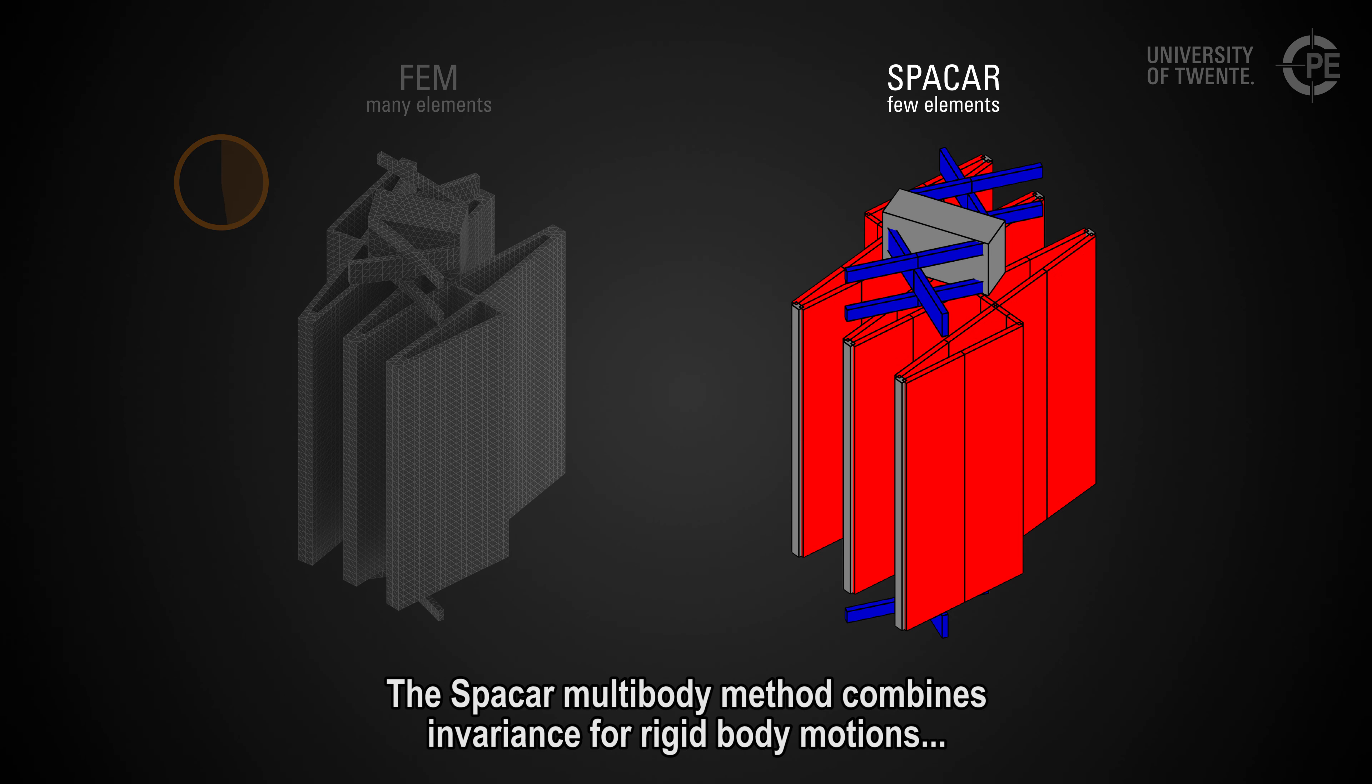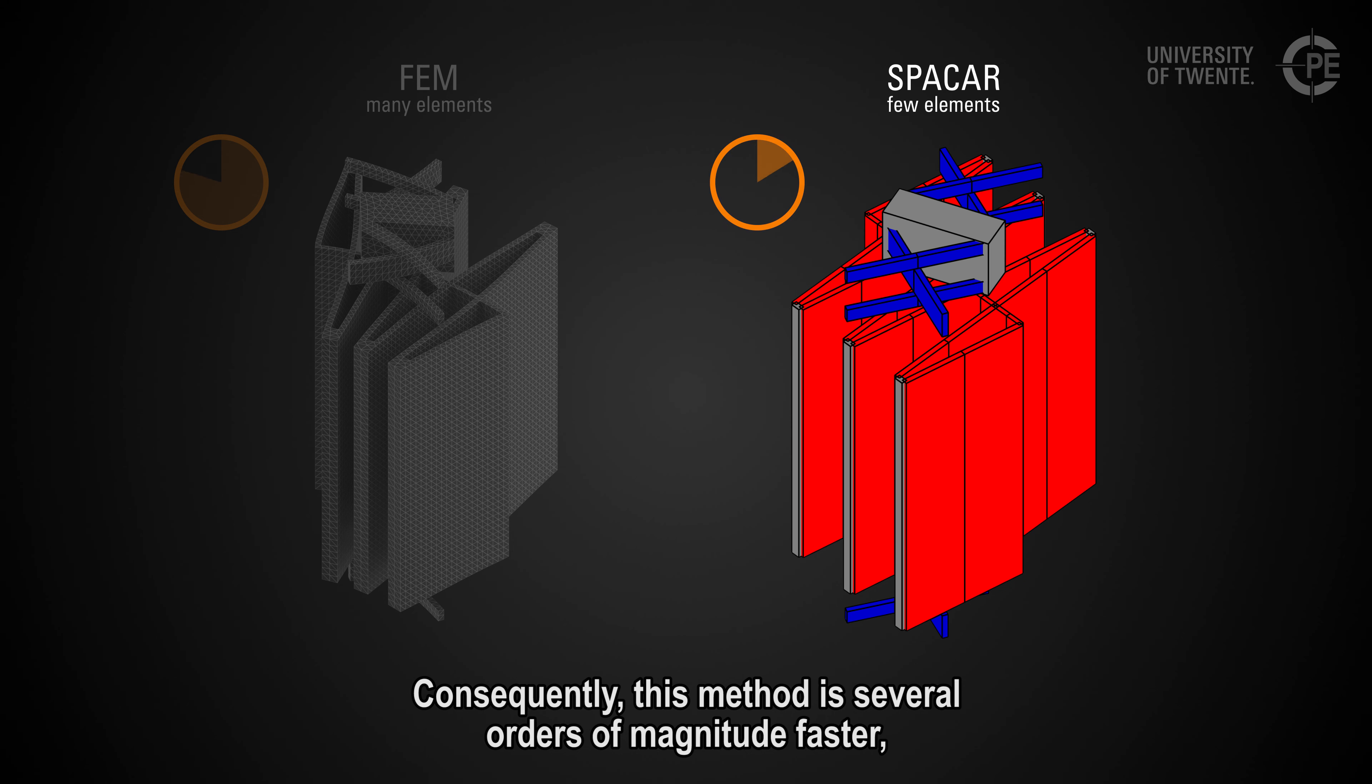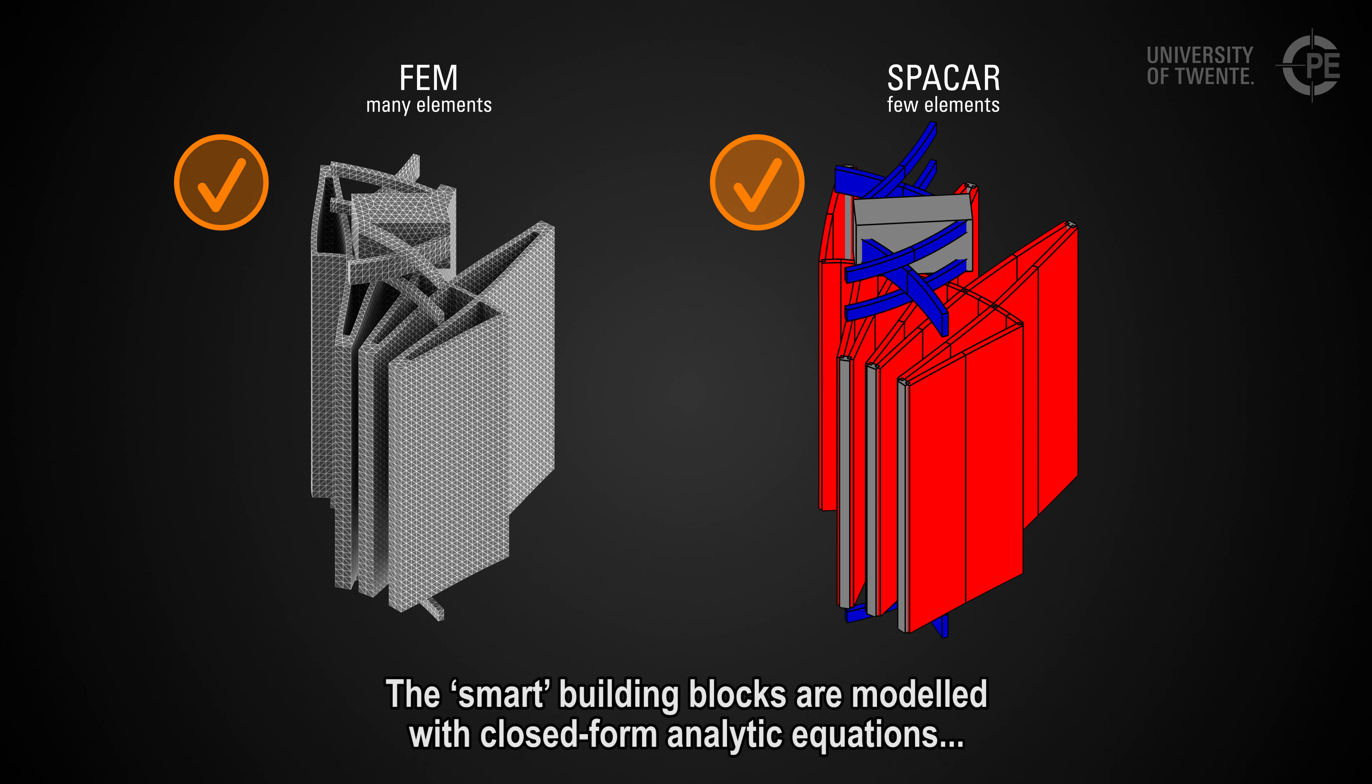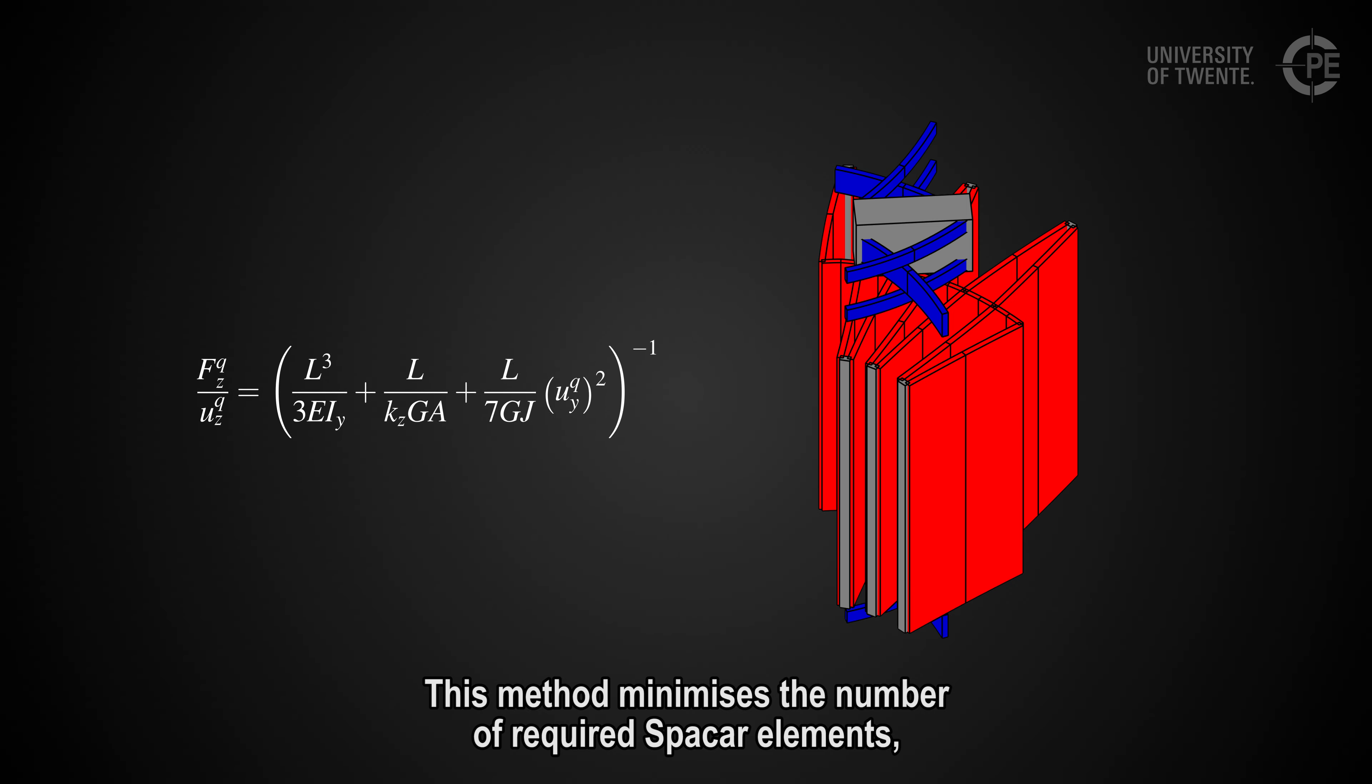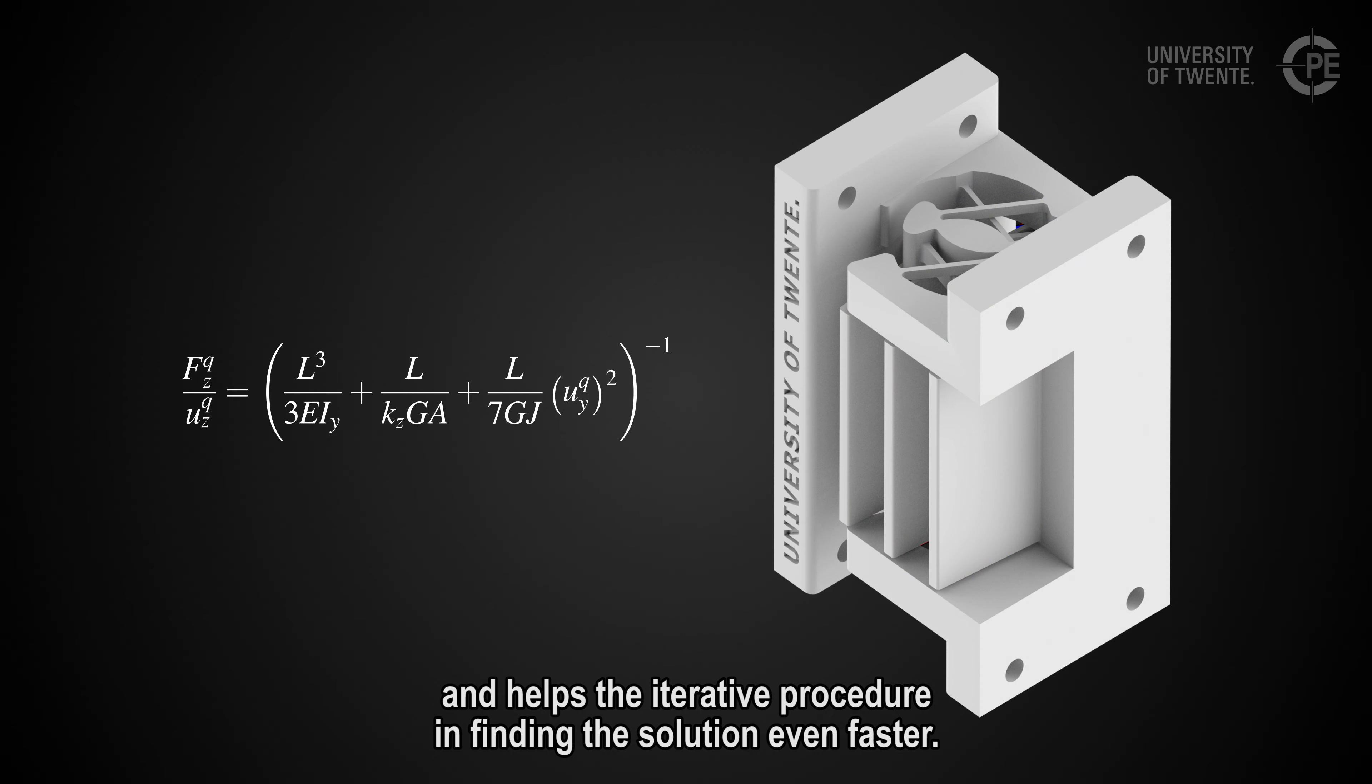The Spacer multi-body method combines invariants for rigid body motions with linear beam models. Consequently, this method is several orders of magnitude faster while capturing the relevant geometrically non-linear behavior. The smart building blocks are modeled with closed form analytic equations to describe their non-linear behavior in a very efficient way. This method minimizes the number of required Spacer elements and helps the iterative procedure in finding the solution even faster.